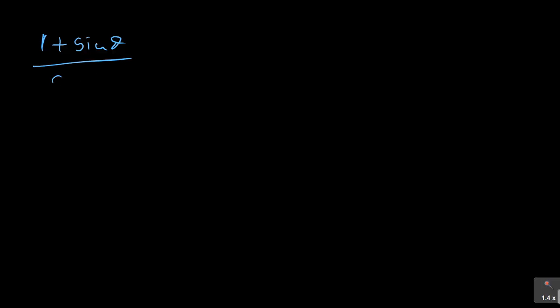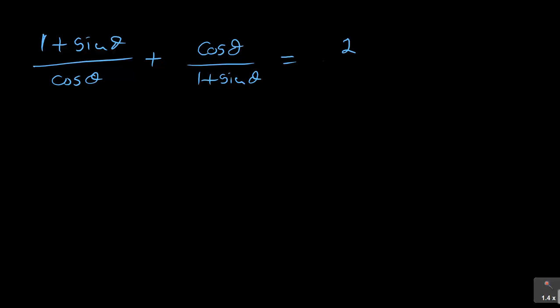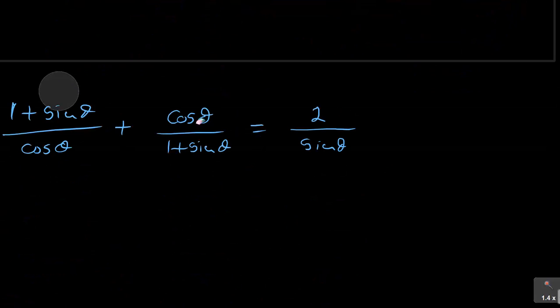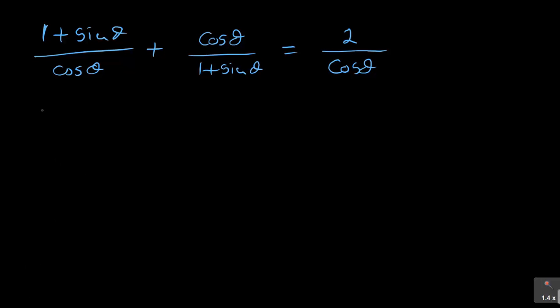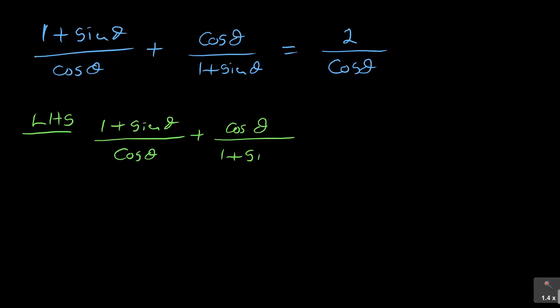So now let me work it below. In this case, we have (1 + sin θ)/cos θ + cos θ/(1 + sin θ). We must prove that it equals 2/cos θ. So let me start with my left-hand side: (1 + sin θ)/cos θ + cos θ/(1 + sin θ).